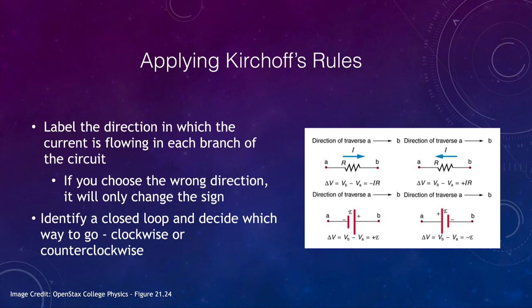So applying these, let's look at what we're doing. The first thing is to label the direction in which the current is flowing in each branch of the circuit. And it doesn't matter if you get the direction wrong. So if you guess wrong, it's okay. All it will do is change the sign. So in this case, it's minus IR. In this case, it's plus IR. So the worst you do is if you choose the wrong direction, it gets the sign backwards. So you can still get the right values.